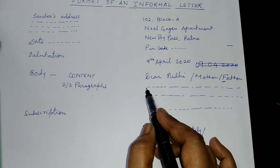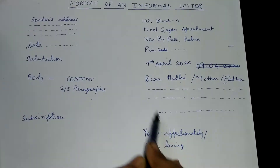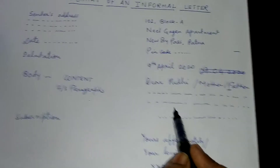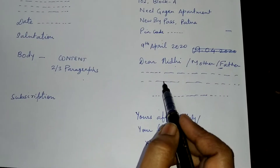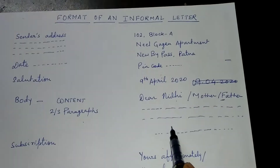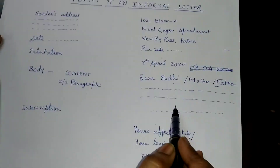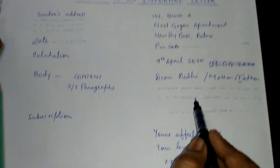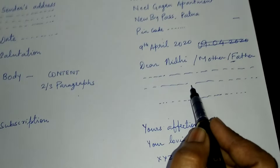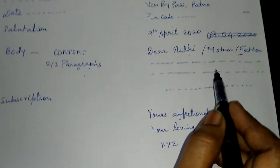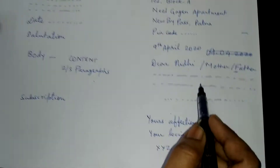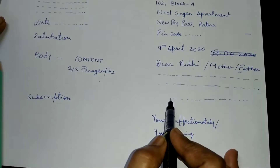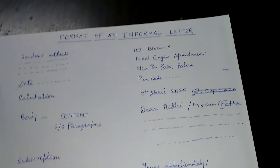After writing the salutation, you start the main body part of your letter. It consists of two or three paragraphs. You write it according to the given question. For example, if you have been asked to write a letter to your friend inviting them to your birthday party, you will write that your birthday is on such and such day and that your parents have organized a party, and so on.